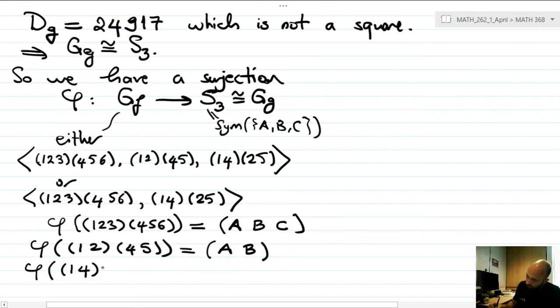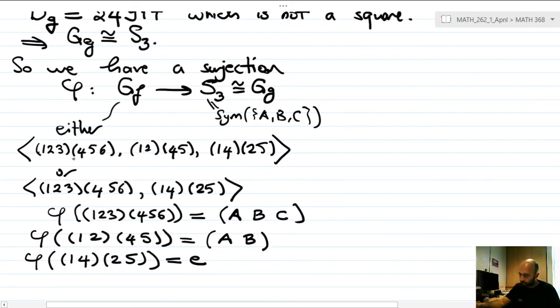However, the other one is different. So (1 4)(2 5) - either 1 and 4 are in an inverse pair, in which case they'll map to a single thing, or 1 goes to 5, (1 5) is an inverse pair and (2 4) is an inverse pair. Again, the product of these two will be identity. So in any case, the image of this is identity. Now let's look at the two possibilities.